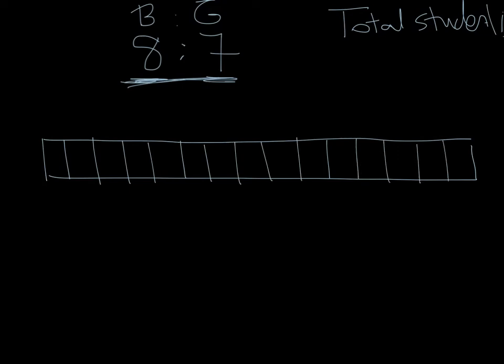We've got 15 parts. We know that 8 of them are going to be boys. There's our sections. 4, 5, 6, 7, 8 sections are boys. 7 sections are girls. Now, we have just modeled our ratio.